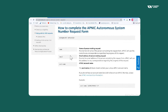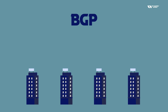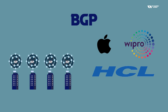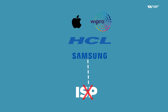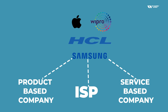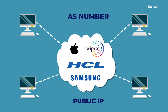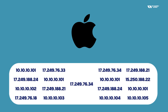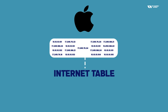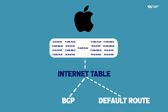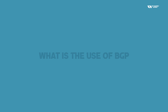Many companies are not ISPs — companies like Apple, Wipro, HCL, and Samsung are product-based or service-based companies. They have their own network, their own public IPs, and they need an AS number. For example, Apple has a 17.x.x.x network. If Apple wants to advertise this to the internet routing table, they will take a BGP connectivity link. When you take internet connectivity, you have two options: take a default route, or use BGP.